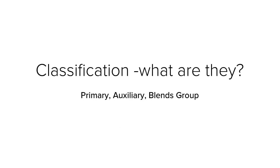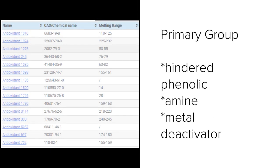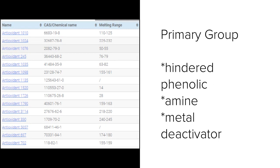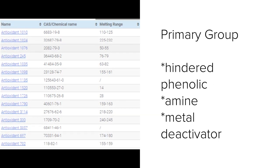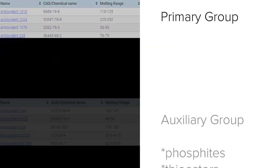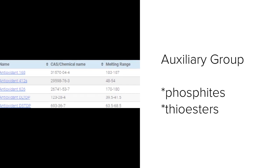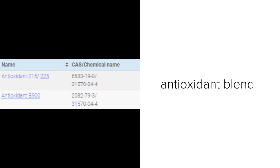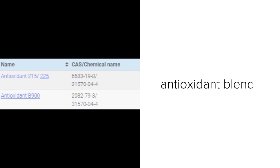Polymer antioxidants can be classified into three categories: primary antioxidants, auxiliary antioxidants, and antioxidant blends. Primary antioxidants include hindered phenolic, amine, and metal deactivator types. Auxiliary antioxidants include phosphites and thioesters. An antioxidant blend is a binary mixture of primary and auxiliary antioxidants.